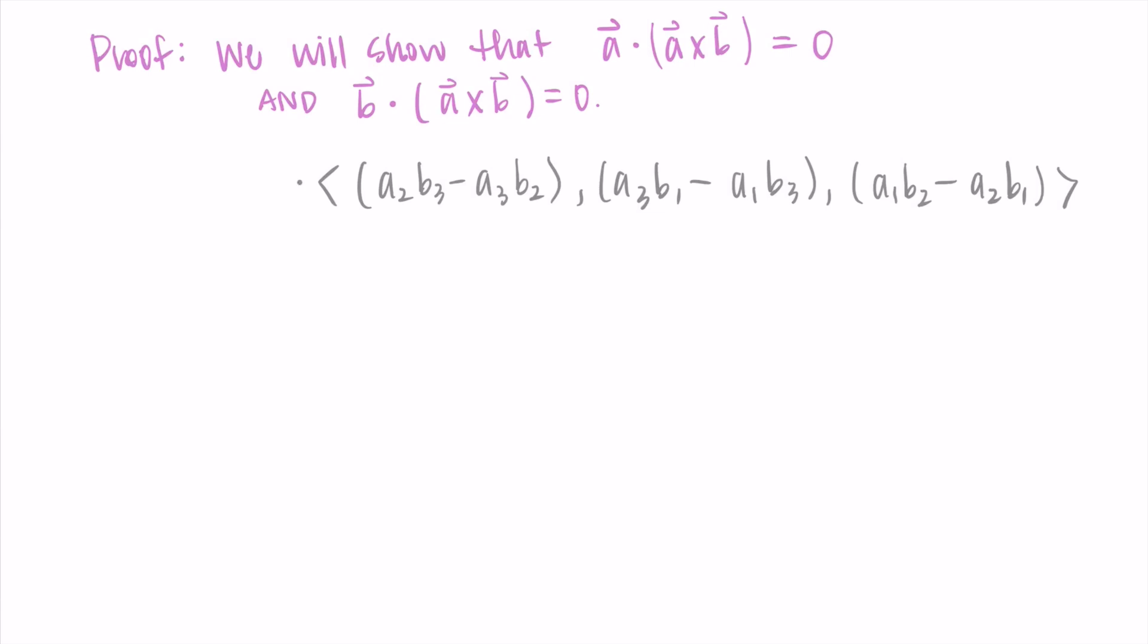So what I do is I write down my vector A: A₁, A₂, A₃, and I'm going to dot it with this long cross product formula that I wrote previously. Now I take the dot product. So I do the first component A₁ multiplied by the first component of that long thing, so A₁ times A₂B₃ minus A₃B₂. Then I do the Y components multiplied, so A₂ times the Y component of the cross product. And then I do A₃ times the Z component. I'm just computing the dot product here.